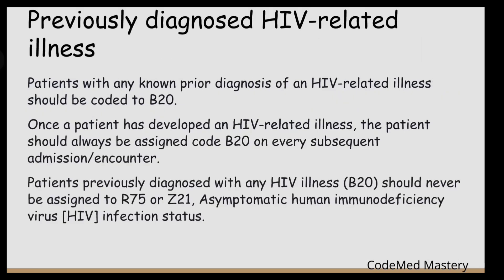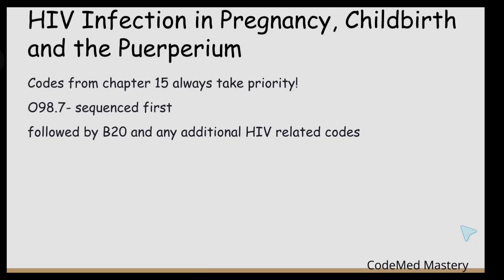The next guideline covers previously diagnosed HIV-related illness. Patients with any known prior diagnosis of HIV should be coded B20. Once a patient has developed an HIV-related illness, they should always be assigned code B20 on every subsequent admission or encounter. Patients previously diagnosed with any HIV illness should never be assigned R75 or Z21.